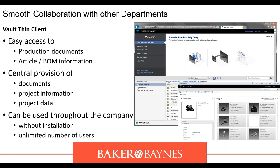Smooth collaboration with other departments is supported by the Vault Thin Client, a web-based client. It provides easy access to production documents, central provision of documents, project information, and project data. It can be used throughout the company without installation and supports unlimited numbers of users. You only need internet access — type the link into your browser URL and you have access to your web-based Vault client.